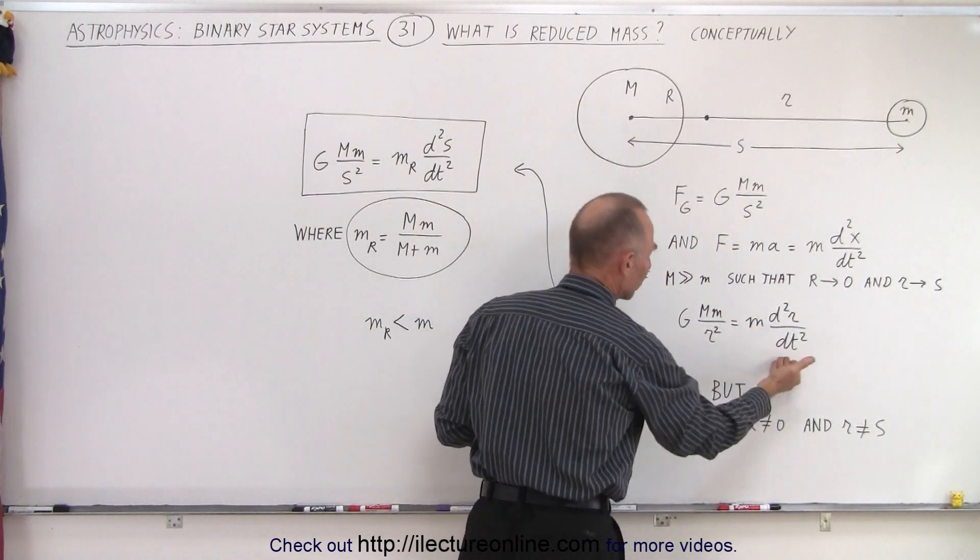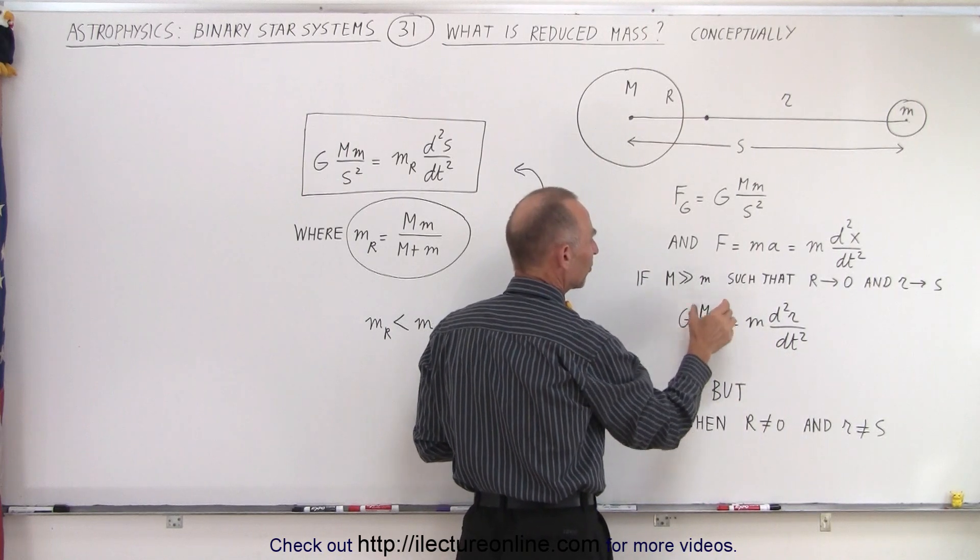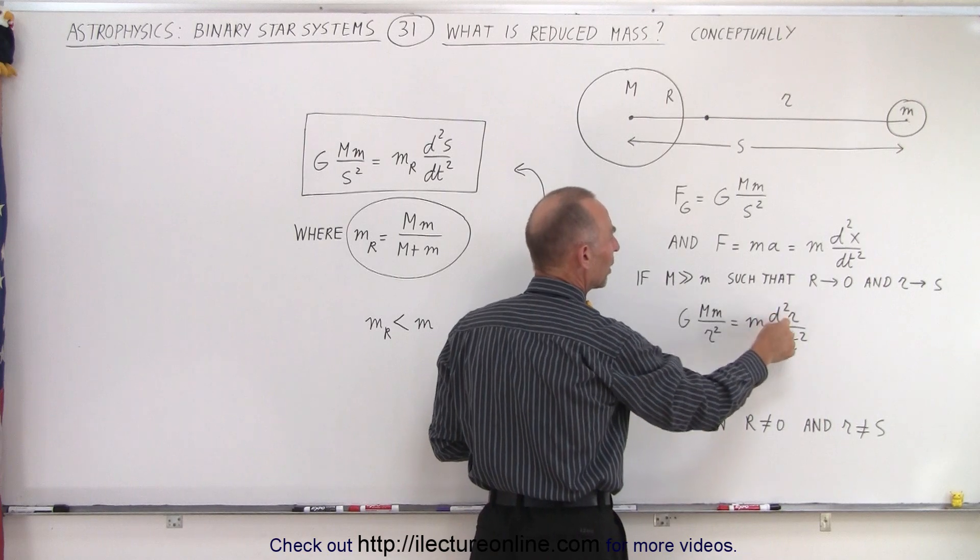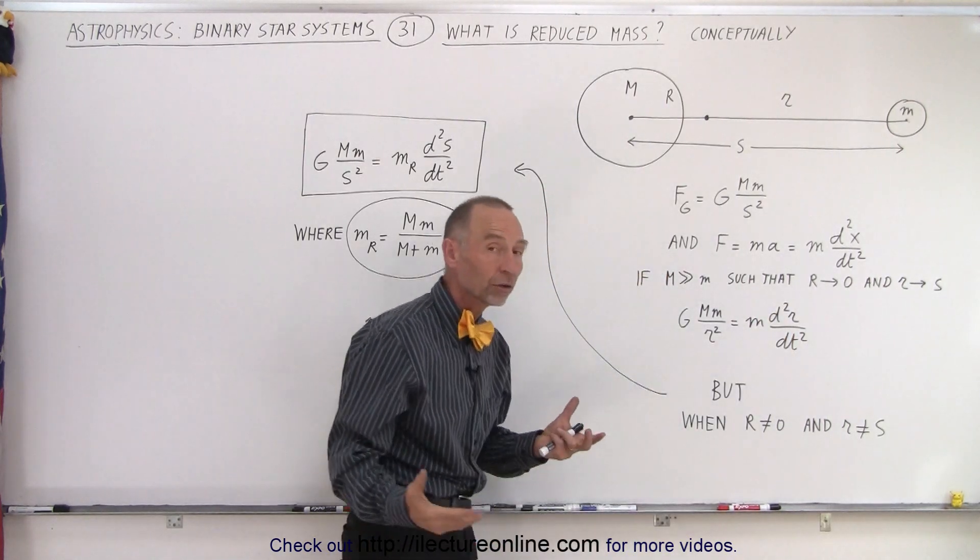If that's the case, we can simply write the equation like this, where G times the product of the two masses divided by the distance between them squared equals the mass times acceleration in terms of r, the distance between the two.